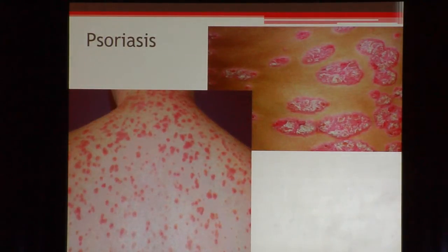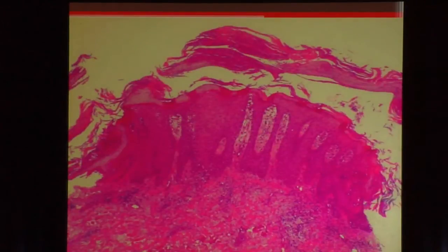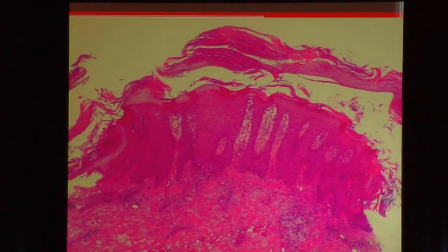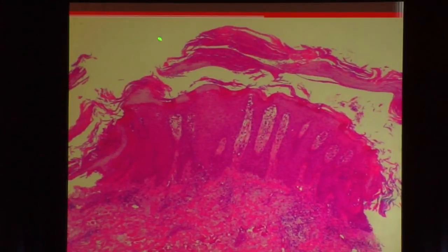Psoriasis presents as erythematous plaques with a silvery scale. Histologically, it shows psoriasiform down growths of the epidermis, but without the spaces — very little spongiosis. Unless you take an acral biopsy, you won't see spongiosis. There are other characteristics such as neutrophils in the stratum corneum. Psoriasis on biopsy is usually fairly definitive, though on acral surfaces it can appear similar to psoriasiform spongiotic dermatitis.